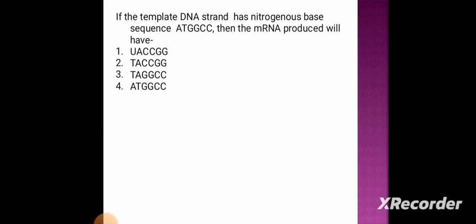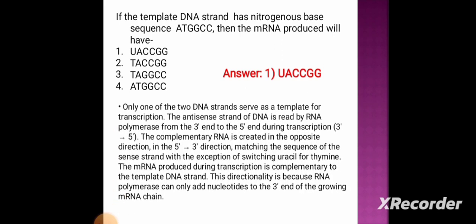If the template DNA strand has nitrogenous base sequence ATGGCC, then the mRNA produced will have the sequence — option 1: UACCGG, option 2: TACCGG, option 3: TAGGGCC, option 4: ATGGCC. The correct answer is option 1, UACCGG. Only one of the two DNA strands serves as a template for transcription. The antisense strand of DNA is read by RNA polymerase from the 3' end to the 5' end during transcription. The complementary RNA is created in the opposite direction (5' to 3'), matching the sequence of the sense strand but switching thymine for uracil.